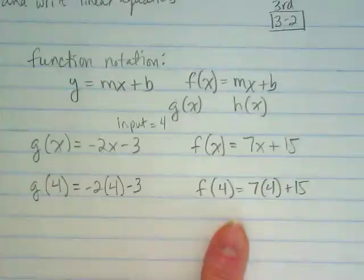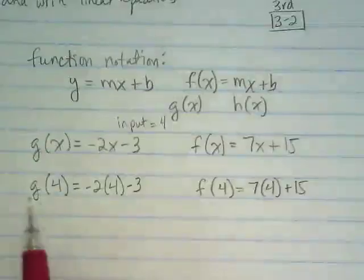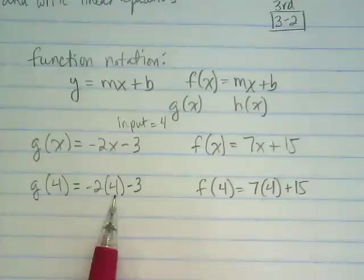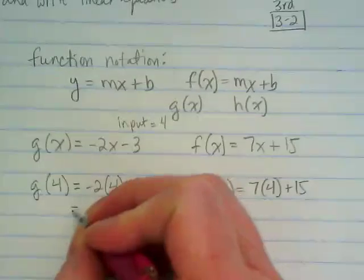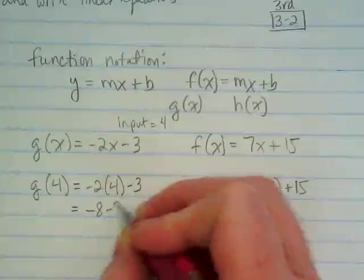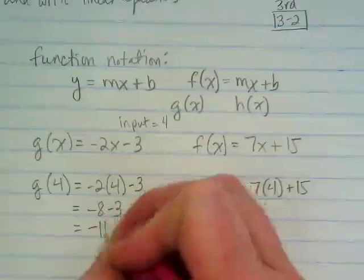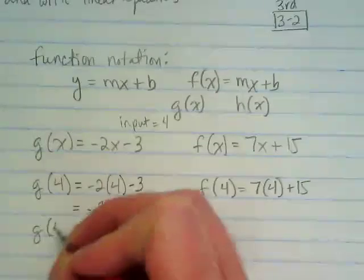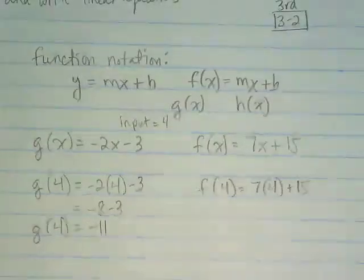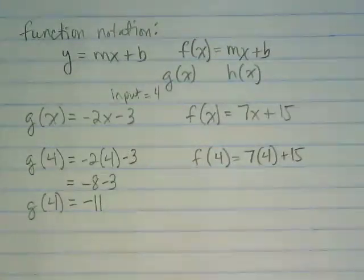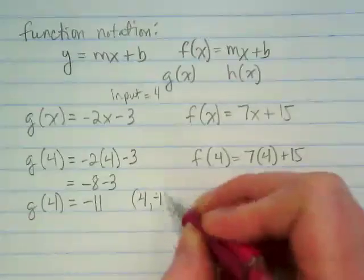Compare it to mine. Does yours look similar? What we're saying here is if our input is 4 we're going to put that in where the x is and let's find out what our output would be. So this is equal to negative 8 minus 3 and negative 8 minus 3 would become negative 11. So when our input is 4 our output is negative 11. That means we have an ordered pair. Input would be 4, output would be negative 11.